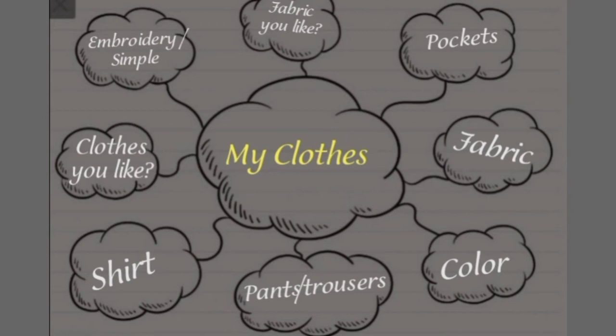Are your clothes painted, embroidered, or simple? What is the fabric of your clothes? You have to write this on the next point. Do you have pockets in your clothes? If you have pockets, write a sentence on it. Which fabric do you like? Are your clothes embroidered or simple? Which type of clothes do you like? Write sentences on these points.